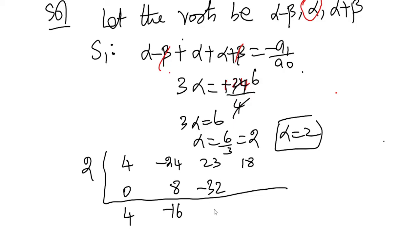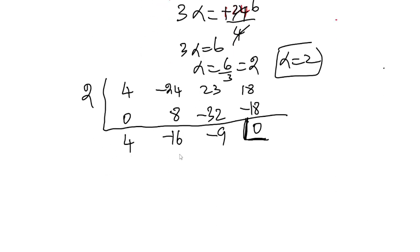Continuing synthetic division: minus 9 into 2 gives minus 18; 18 plus minus 18 equals 0. The remainder is 0, confirming alpha = 2 is a root. The resulting quotient gives the equation 4x² minus 16x minus 9 equals 0.